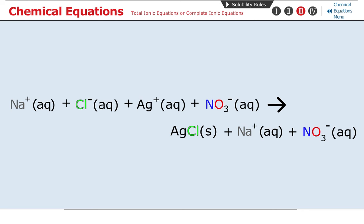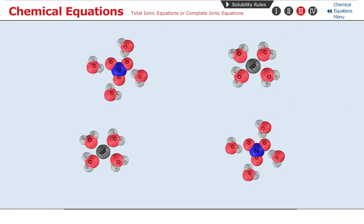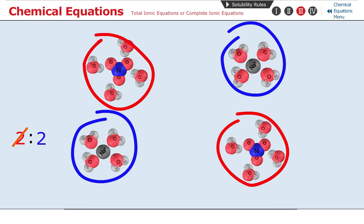If we compare this equation to the atomic level animations of the reaction, notice that the equation is showing the simplest whole number ratio of the reacting species, while the animation shows multiples of this ratio.